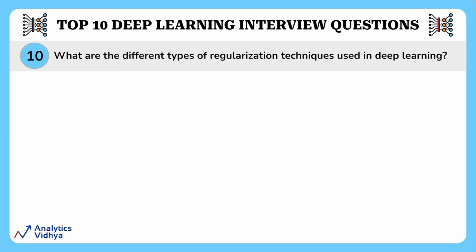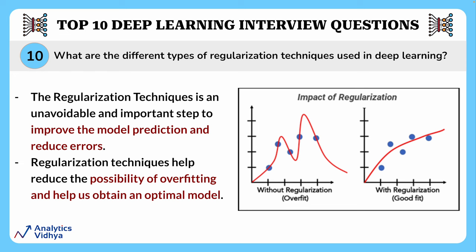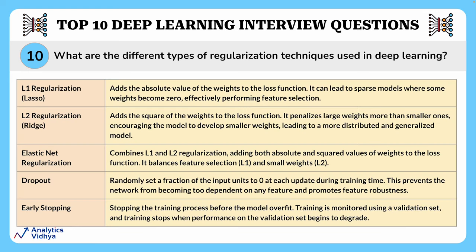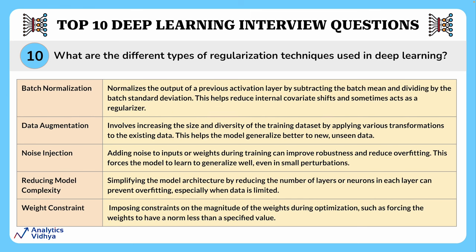The final question asks about the different types of regularization techniques in deep learning. Regularization is an important step to improve model prediction and reduce errors, and helps reduce the possibility of overfitting to obtain an optimal model. The techniques include: L1 regularization (Lasso), L2 regularization (Ridge), elastic net regularization, dropout, early stopping, batch normalization, data augmentation, noise injection, reducing model complexity, and weight constraints.